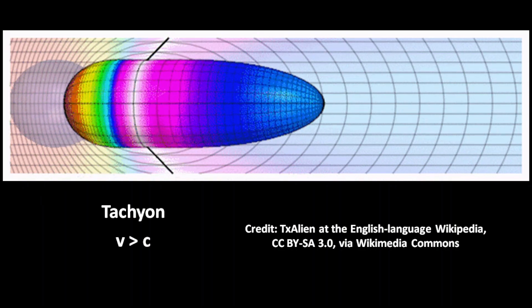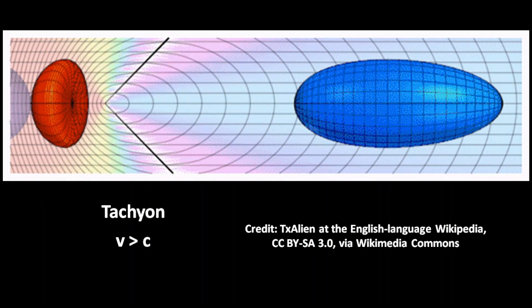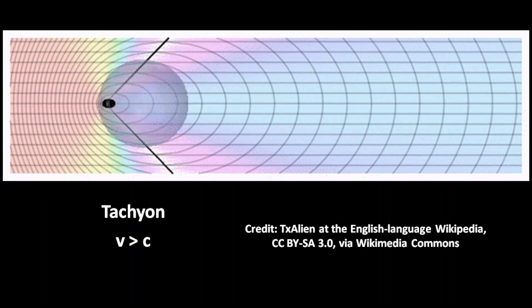A tachyon's energy decreases with higher speed. More and more energy is needed to slow down a tachyon near the speed of light.